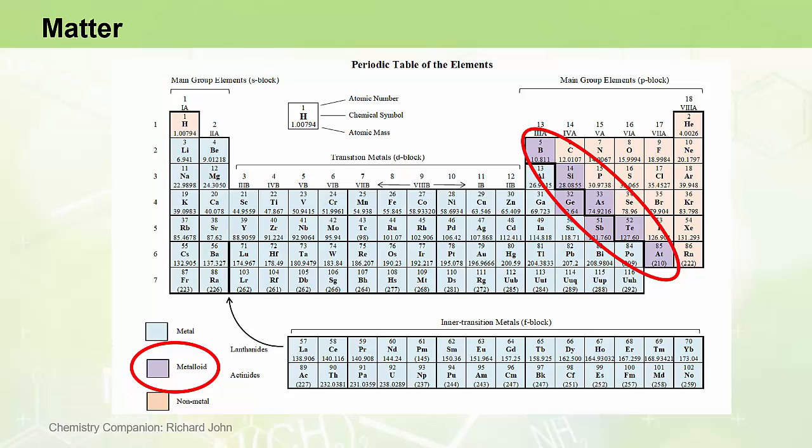The metalloids can gain, lose or share electrons during chemical reactions depending on the substances with which they react. So, not only does their position lie between metals and non-metals in the periodic table, their chemical and physical properties also lie between metals and non-metals.